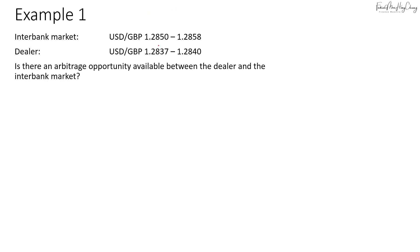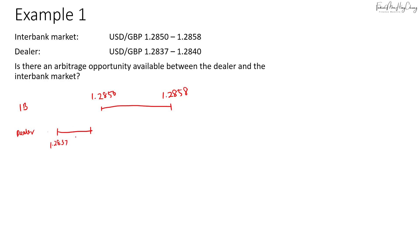For the interbank market, if I draw it out, we have 1.2850 to 1.2858. And for the dealer's quote, the range is from 1.2837 to 1.2840. So apparently there is a gap between the dealer and the interbank market. As long as there is a gap between these two, there will be an arbitrage opportunity.